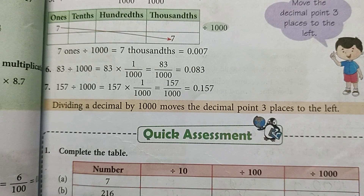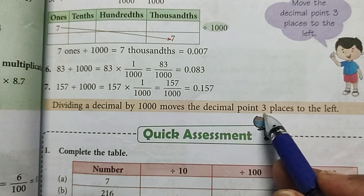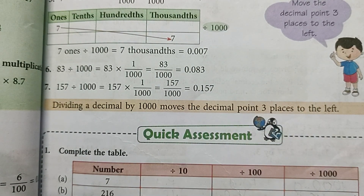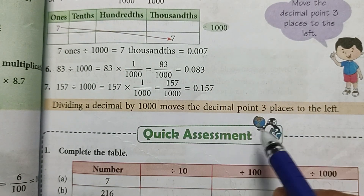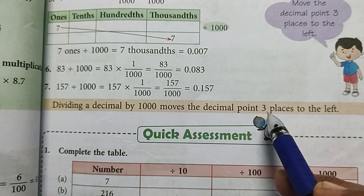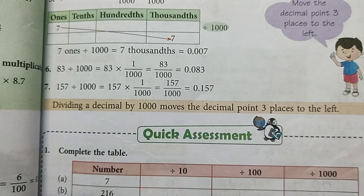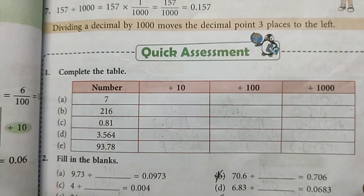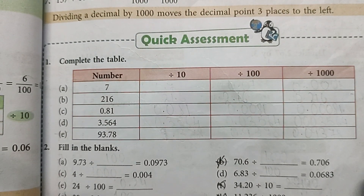Remember this shortcut: dividing by ten shifts the decimal one place to the left, dividing by hundred shifts it two places to the left, and dividing by thousand shifts it three places to the left. Now let's do a quick assessment.